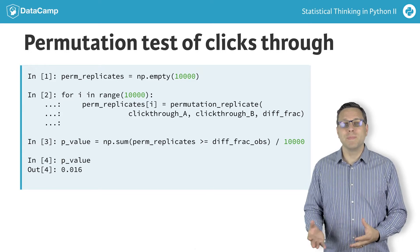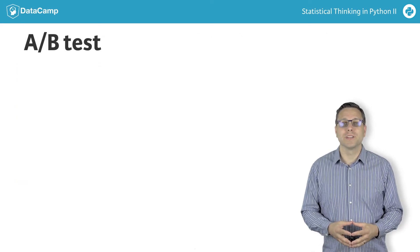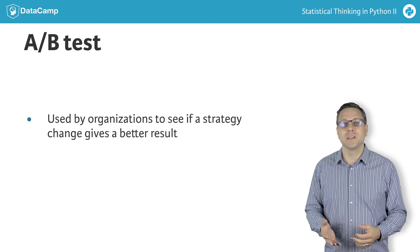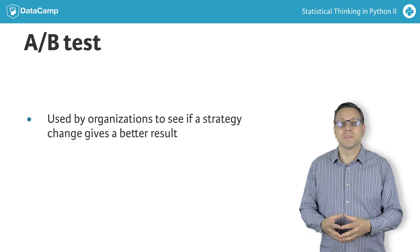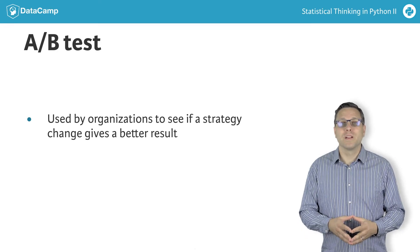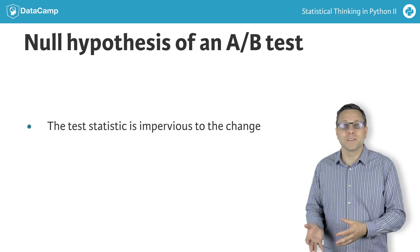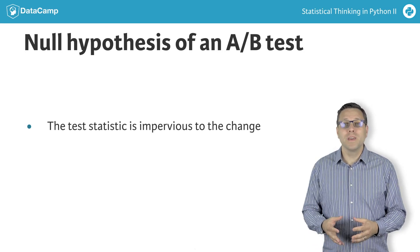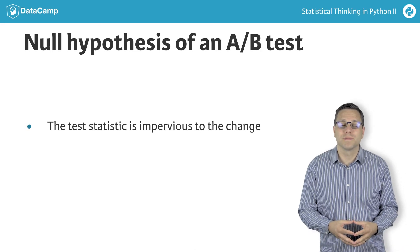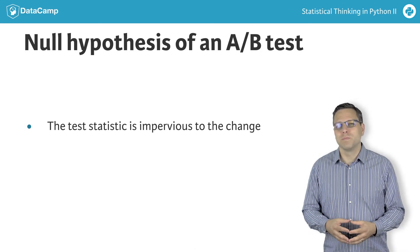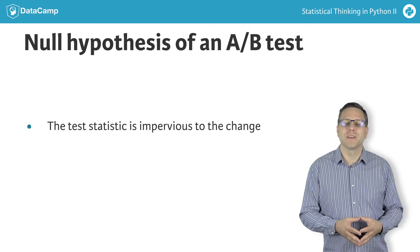This is an example of an A/B test. A/B testing is often used by organizations to see if a change in strategy results in different, hopefully better, results. Generally, the null hypothesis in an A/B test is that your test statistic is impervious to the change. A low p-value implies that the change in strategy led to a change in performance. Be warned, though, that statistical significance does not mean practical significance.